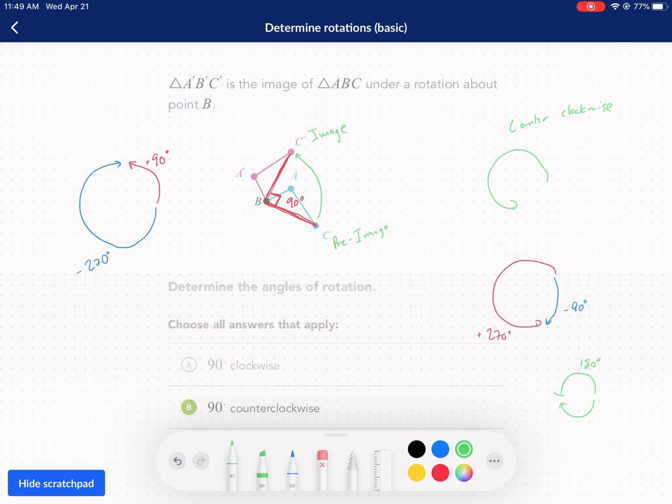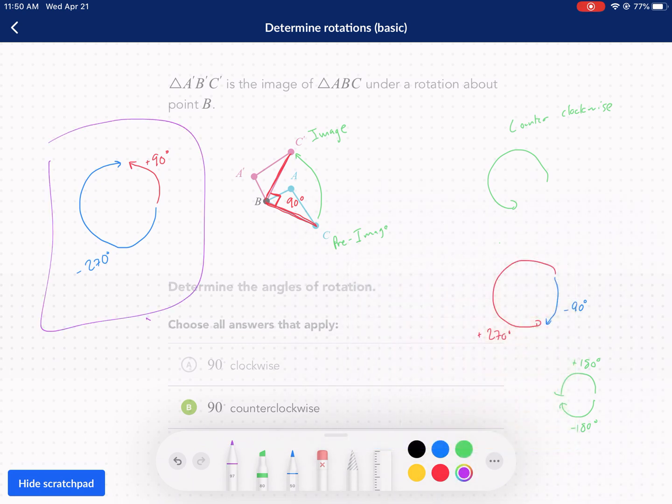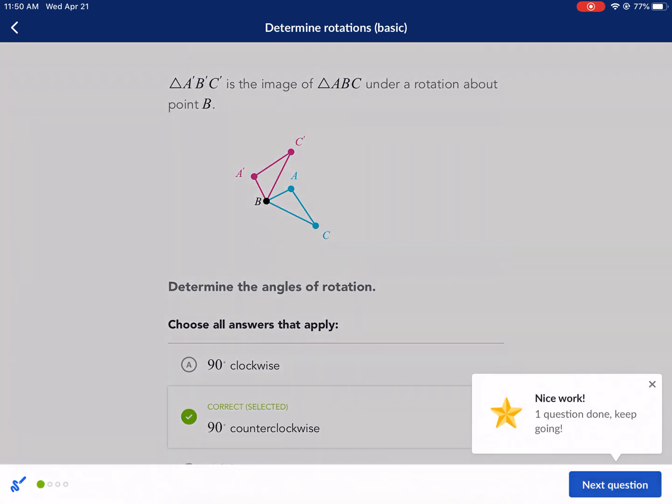So positive or negative 180 will take you to the same spot. But this is the important section that I want you guys to take note of, is that 270 degrees and 90 are the same if they're in opposite direction. So we're going to go ahead and select that as our answer. Move on to the next question.